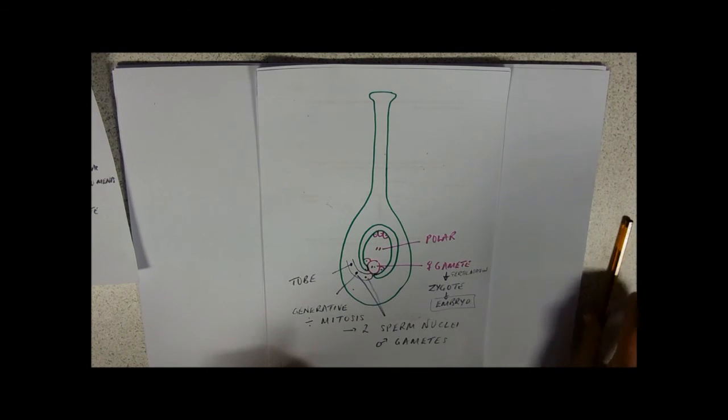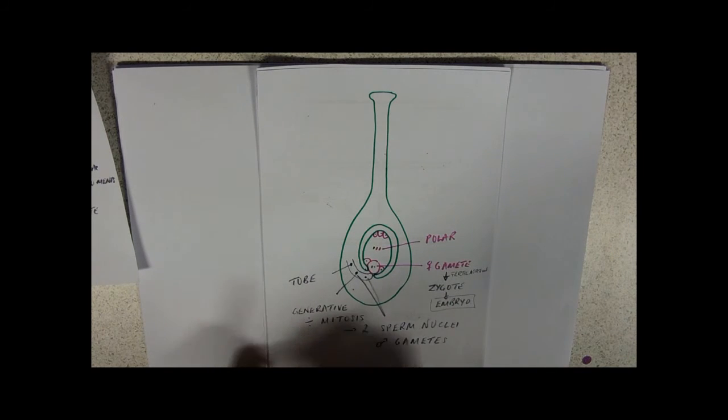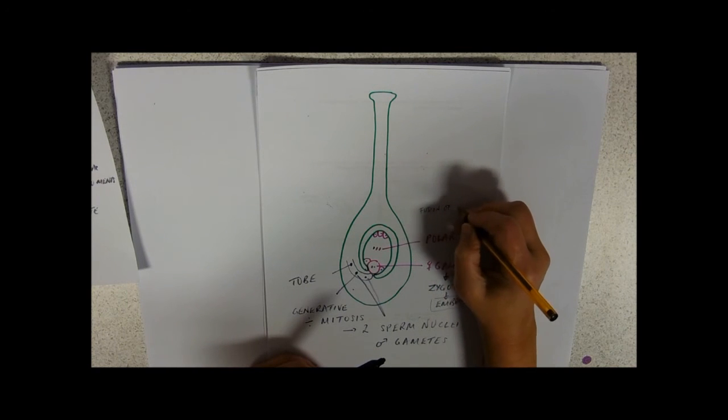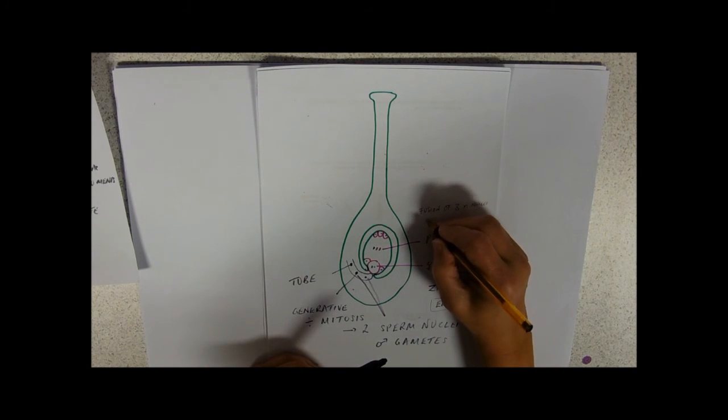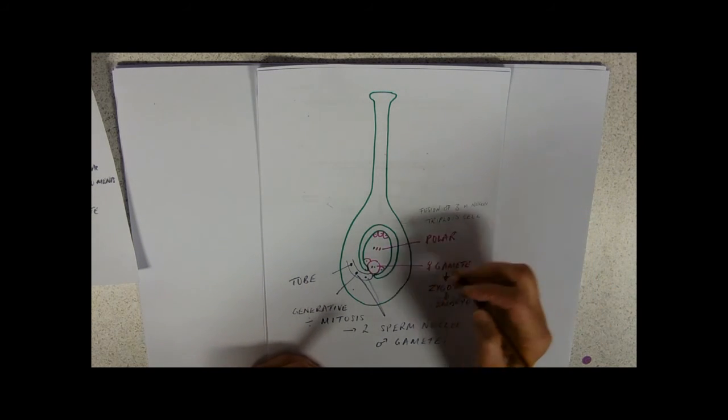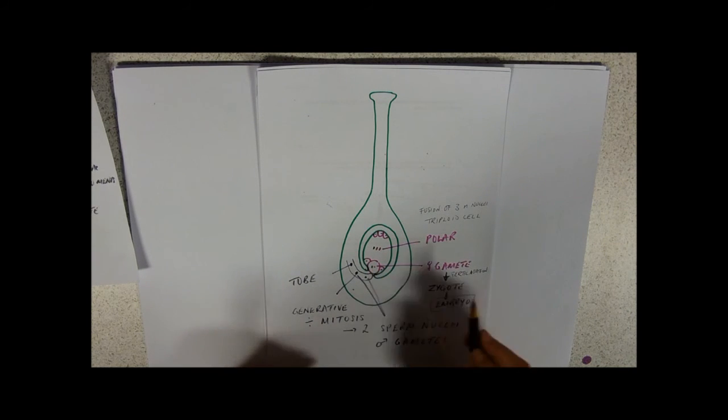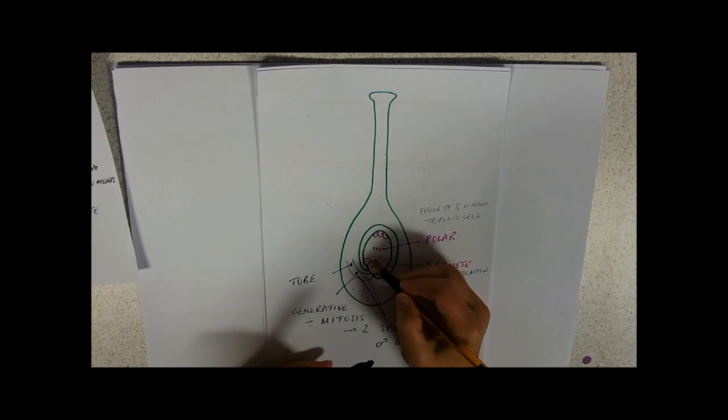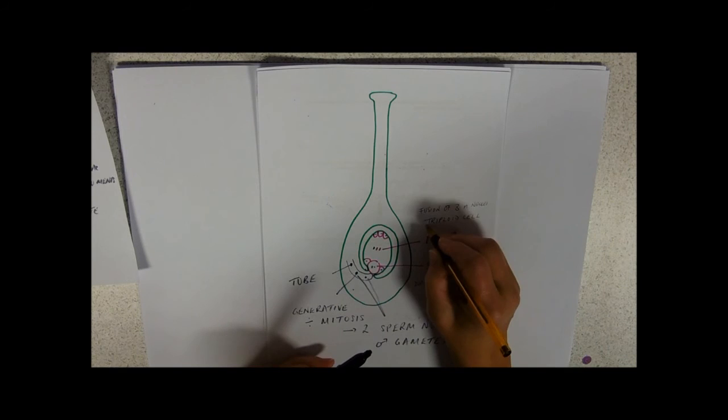And the other one goes and fertilises the polar nuclei. So this is going to fuse—we've got here fusion of three N nuclei. So it's going to make a triploid cell. So we've got one fertilisation event, a haploid nucleus, haploid nucleus, giving a diploid zygote. And we've got this big cell in the middle with two nuclei in it, being fertilised by another one to make a triploid cell.